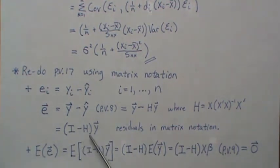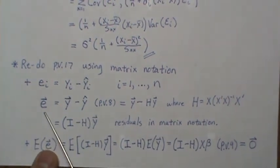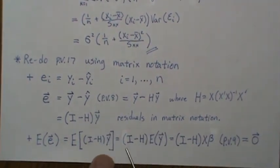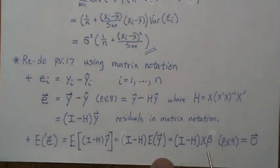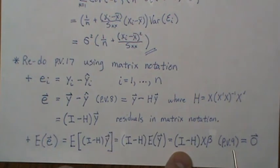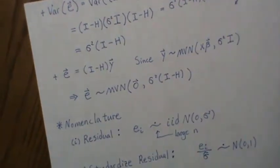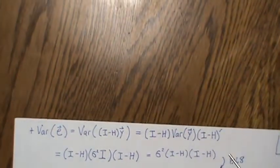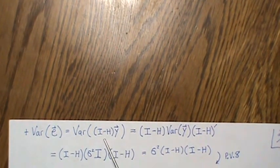The expected value of the residual: E[e] = (I − H)E[Y]. E[Y] equals our fitted model Xβ. From previous video 9, we showed that (I − H)Xβ = 0. So E[e] = 0, confirming mean zero in matrix form.